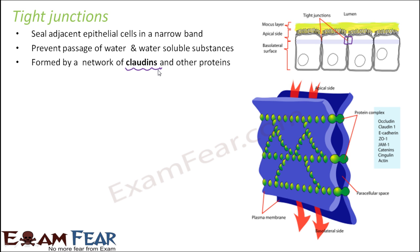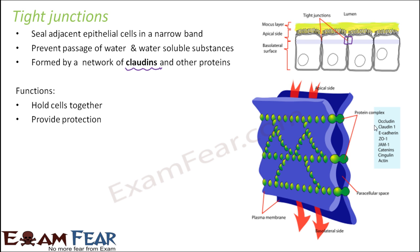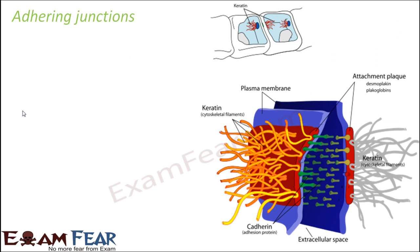All junctions are composed of proteins. In tight junctions, claudins are the predominant proteins, along with other proteins. In the picture, the blue sheet represents the walls of two cells, and the green area represents the tight junction protein complex formed by claudins. Their functions are to hold cells together and provide protection by preventing water leakage and blocking foreign particles.